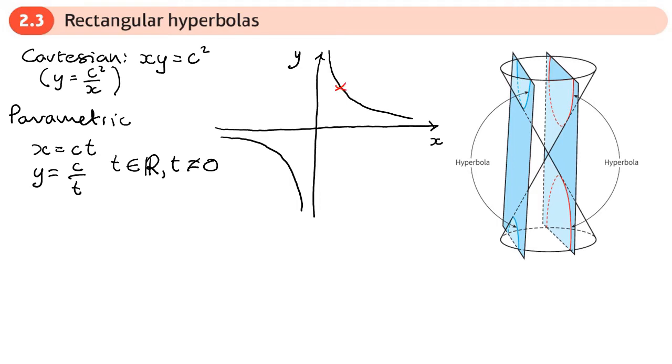If we want to take a general point on this curve in Cartesian form, it's going to be (x, y). In parametric form, it's just going to be (ct, c over t). You just take those bits off the parametric equation to get your general x and y coordinates. So this is our rectangular hyperbola.